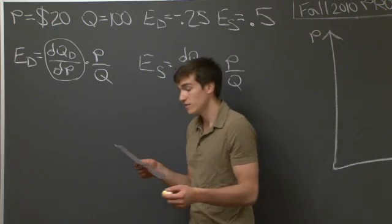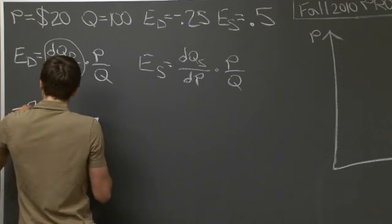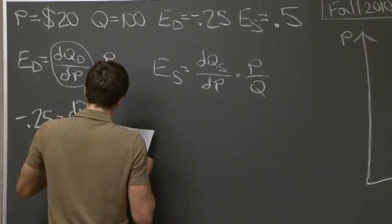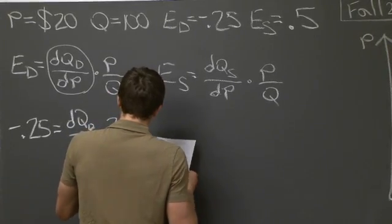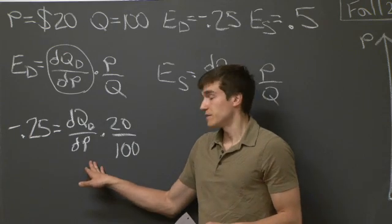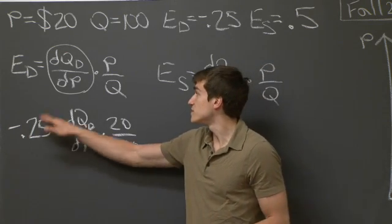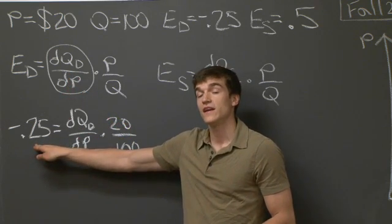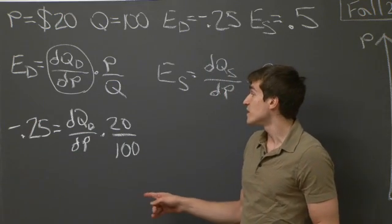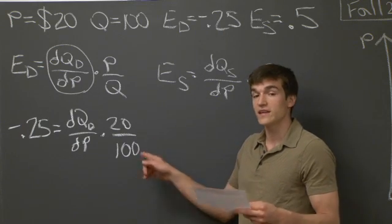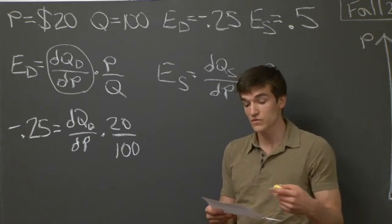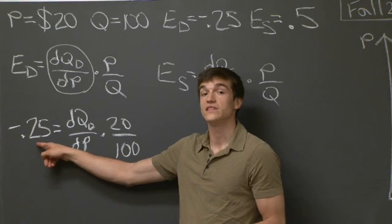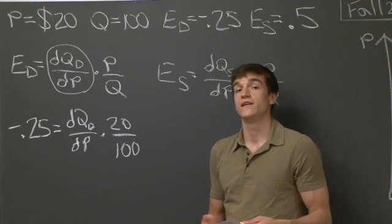Substituting in for the elasticity of demand, p, and q, we get our equation. Notice that since the derivative of the demand curve with respect to p is negative 0.25 and we know the curve is linear, at any point on this line the derivative is always going to equal negative 0.25. So we can integrate and get the correct answer. It's useful to know that the linearity holds throughout, not just at the point where price is 20 and quantity is 100.